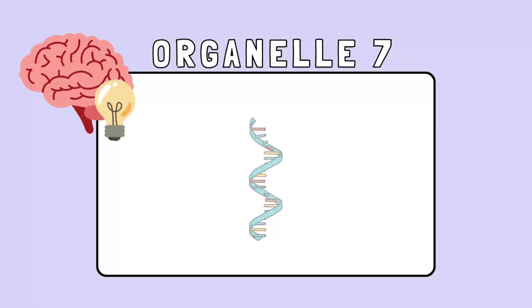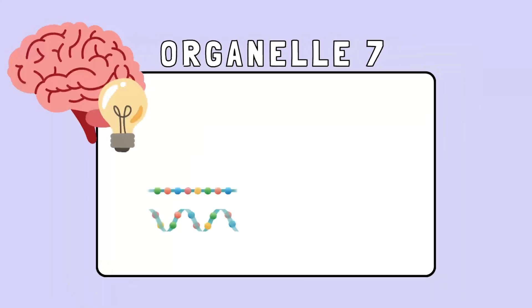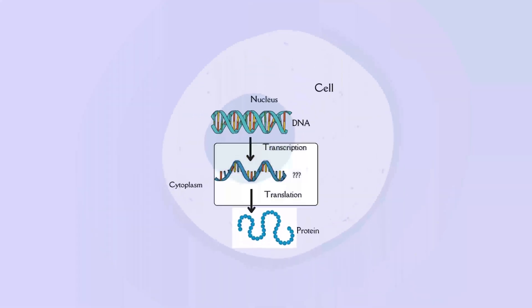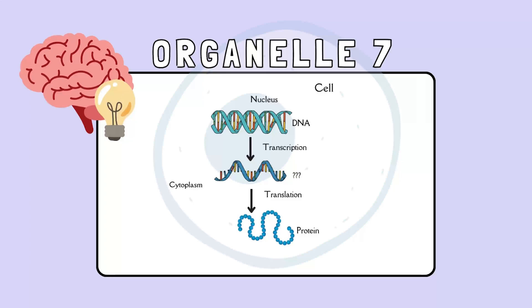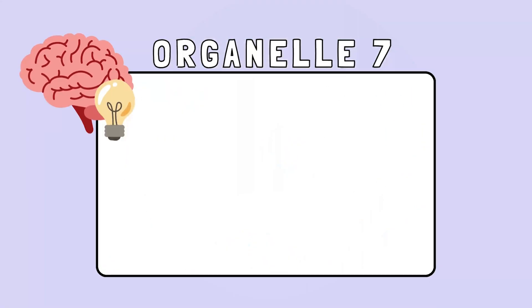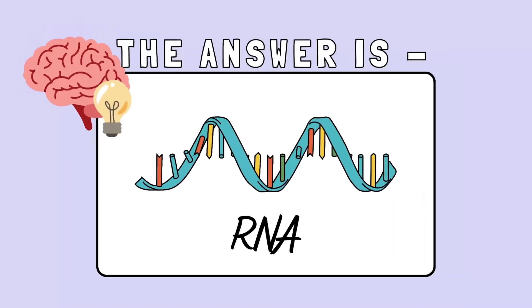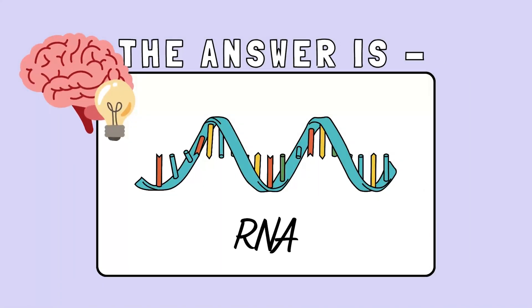This single-stranded cousin of DNA helps make proteins by carrying messages, and plays a key role in translation and transcription. The answer is RNA, or ribonucleic acid — the messenger molecule that turns DNA's plan into reality by making proteins.